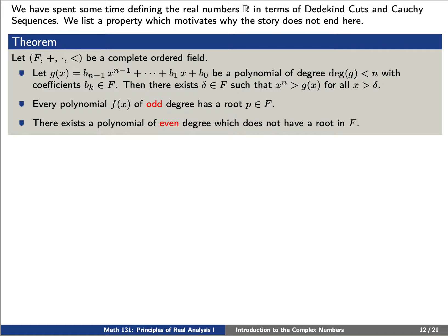Then there exists a delta such that x to the n is greater than g of x for all x greater than delta. Second, every polynomial f of odd degree has a root p in our field f. And third, there exists a polynomial of even degree which does not have a root in f.